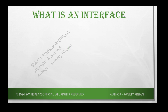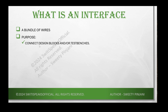Let's start with understanding what is an interface. In very simple words, you can think of an interface as a bundle of wires. Why do we need this bundle of wires? The reason is I need to connect my design blocks to the test bench. There will be a lot of signals inside your design and test bench, and they need to interact with each other. I need to pass some inputs to the design and get some outputs from the design to read in my test bench.